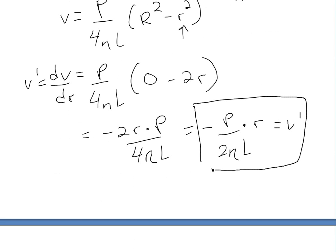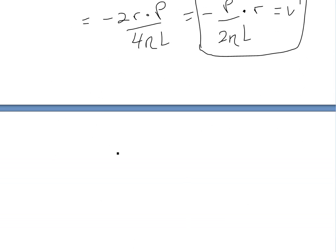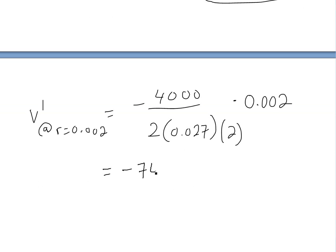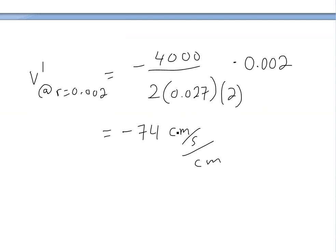Now we plug in our numbers. V prime at r equals 0.002 equals negative 4000 divided by 2 times 0.027 times 2, all times r, which is 0.002. Computing this gives negative 74 centimeters per second per centimeter. This is the velocity changing—you're losing 74 centimeters per second every centimeter you move outward.